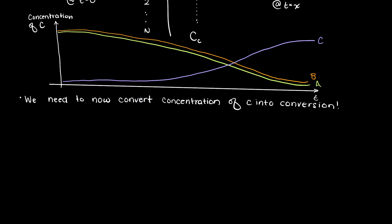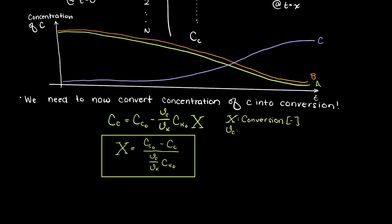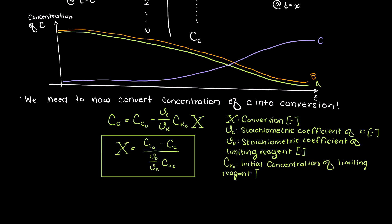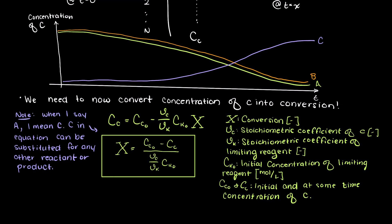For liquid reactions and gas phase reactions with no molar change between the product and reactant, we can express the conversion using the limiting reagent in the following equation. So we have that the initial concentration of component A minus the current concentration of component A divided by the stoichiometric coefficient of our component A over the stoichiometric coefficient of our limiting reagent times the initial concentration of our limiting reagent.